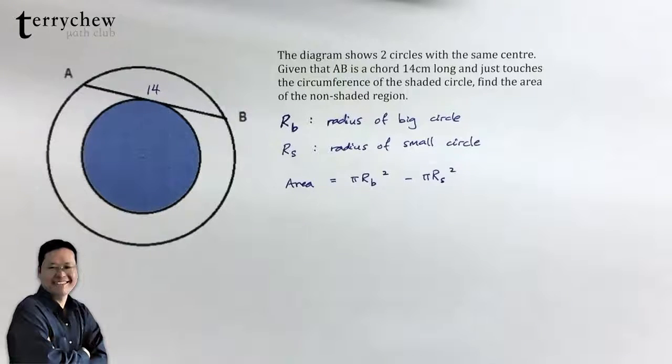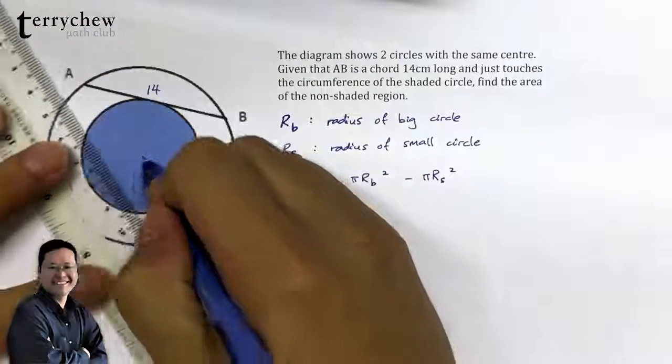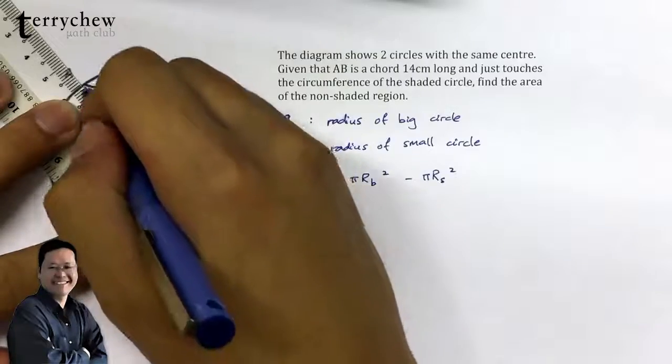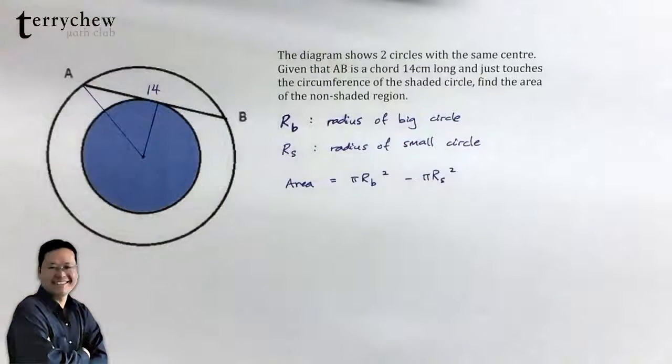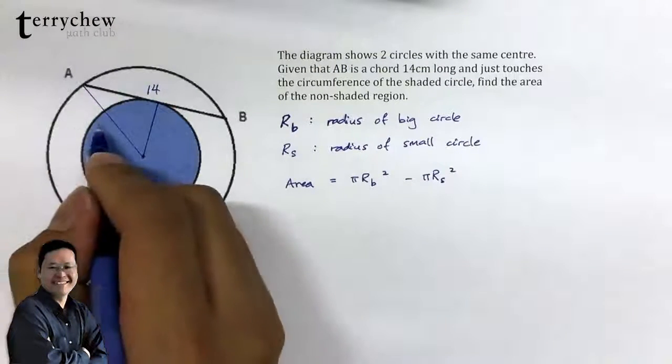Now how do we find this? If we draw this segment right here, observe that this is the radius of the big circle, and if we draw right here we have the radius of the small circle, so it has length RS.